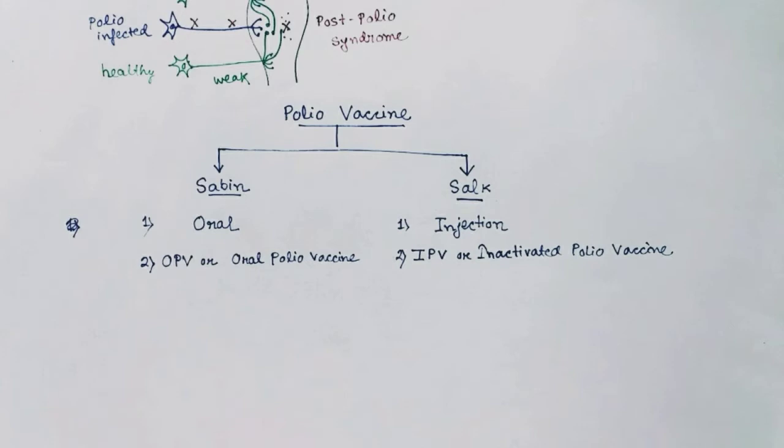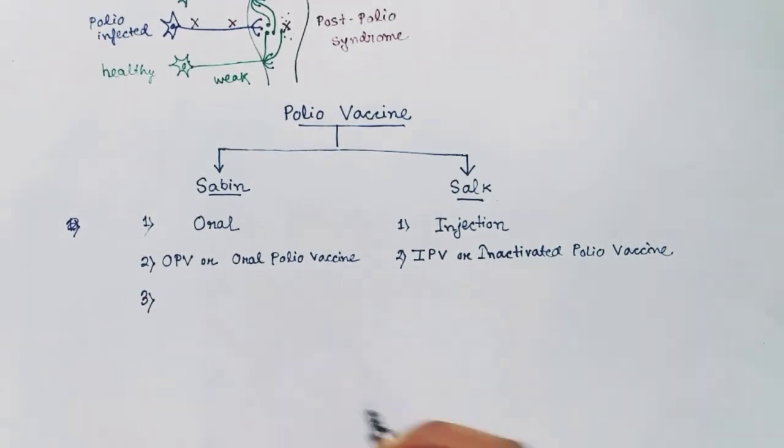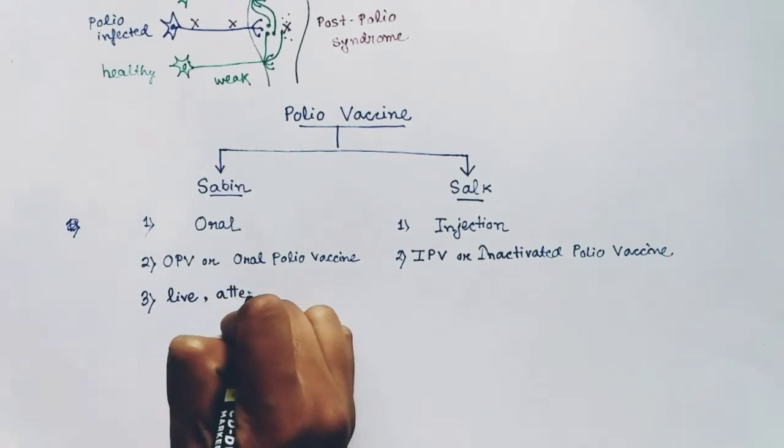But it acts as an antigen to the body and the body recognizes it and makes antibody for it. And now the body is prepared with the antibodies to fight with the real virus and kill the real virus with their antibodies easily.